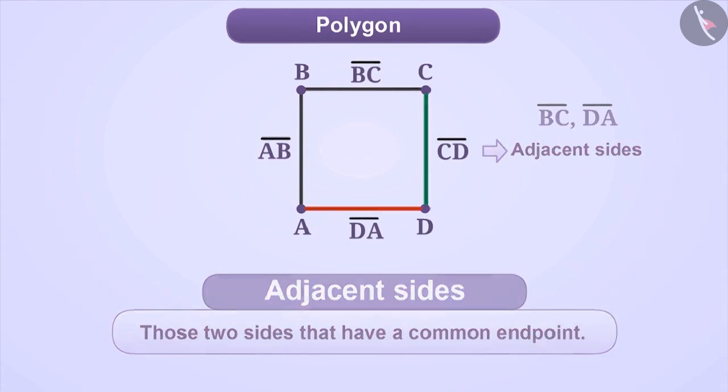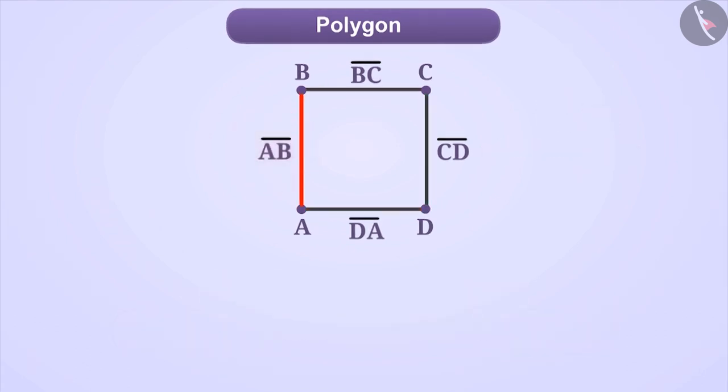Now observe side AB. This side has two end points, point A and point B. The end points of the same side of a polygon are called adjacent vertices. Therefore, point A and point B are adjacent vertices. Similarly, point A and point D are adjacent vertices. But point B and point D are not adjacent vertices. Can you tell me the reason for this?